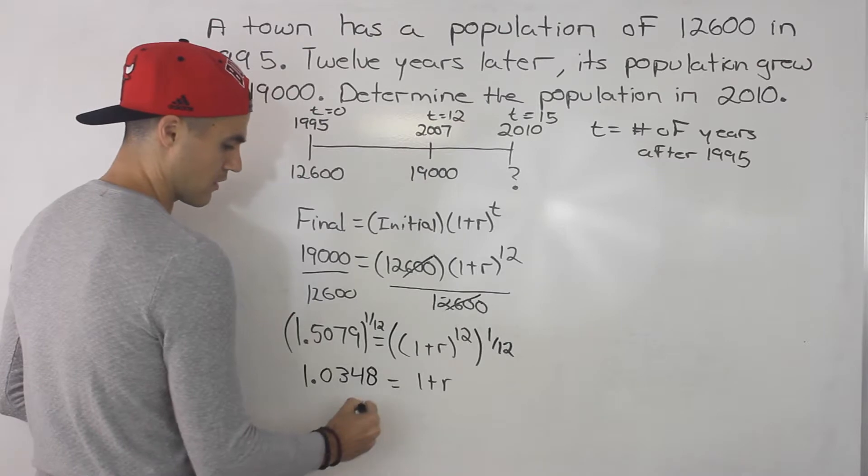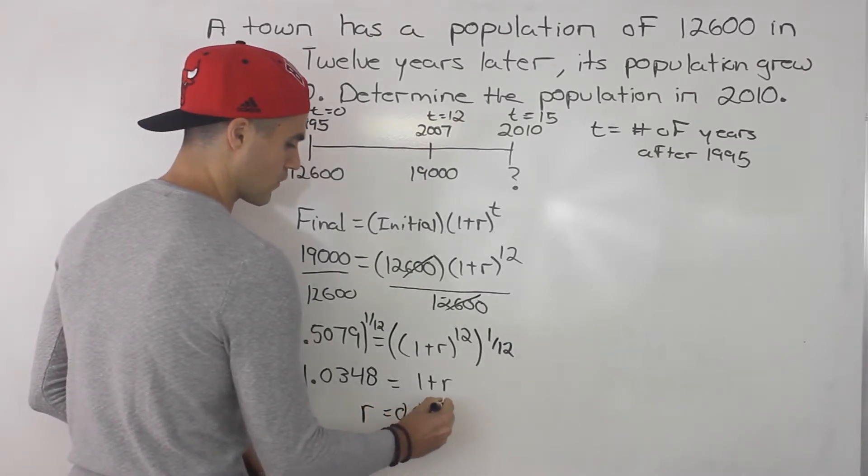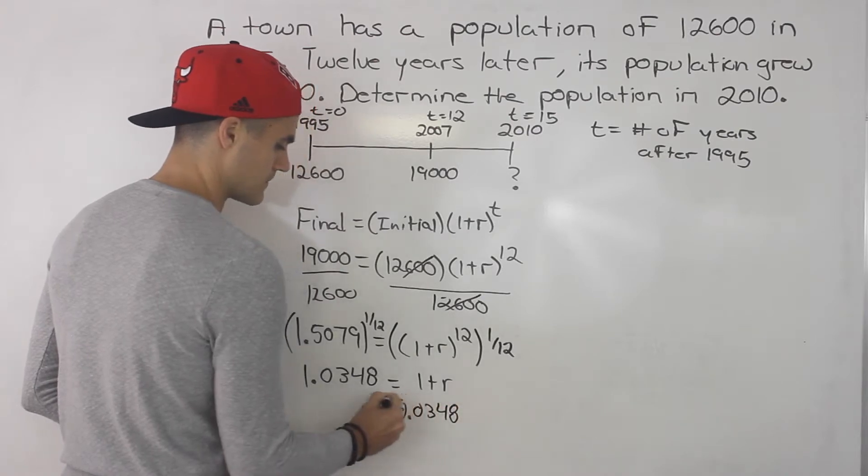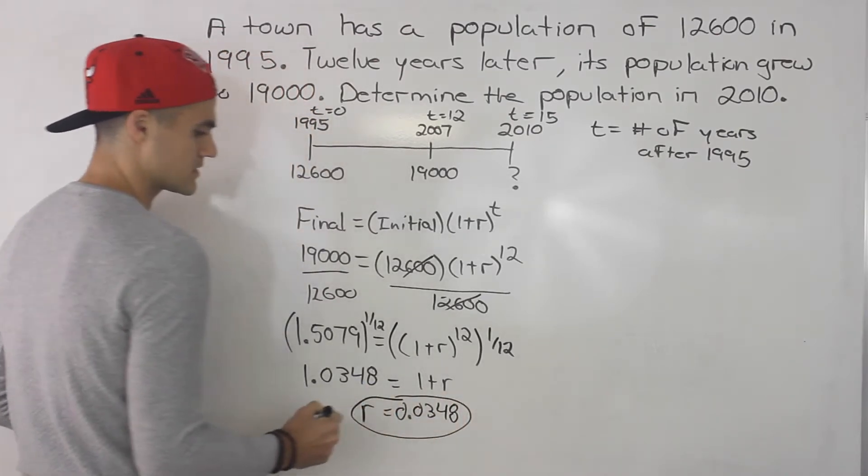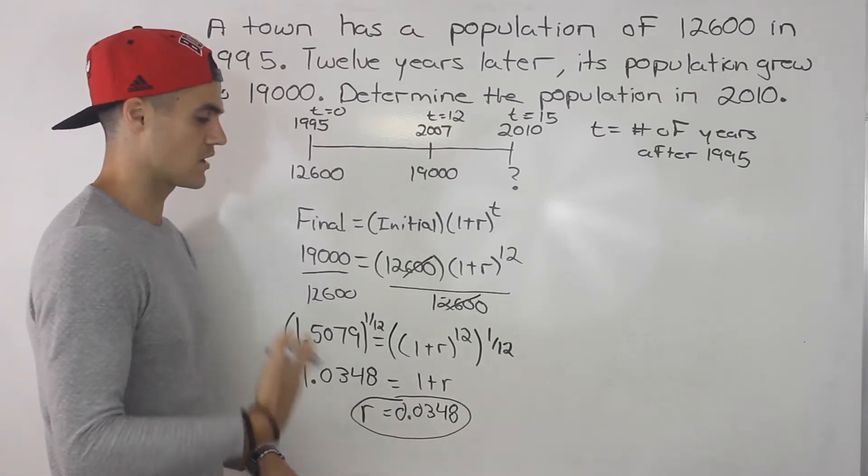So when we isolate for the r, we would get 0.0348. So the population is growing by 3.48% every year.